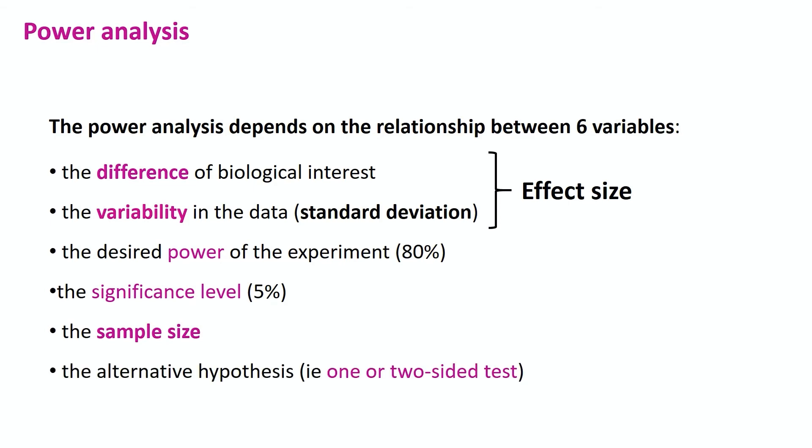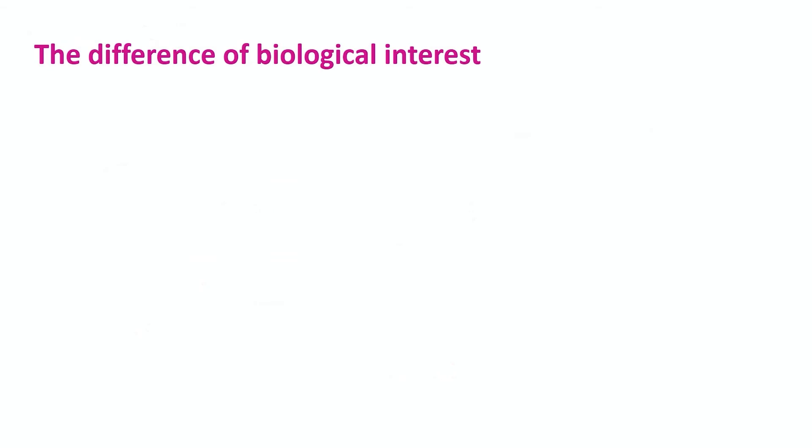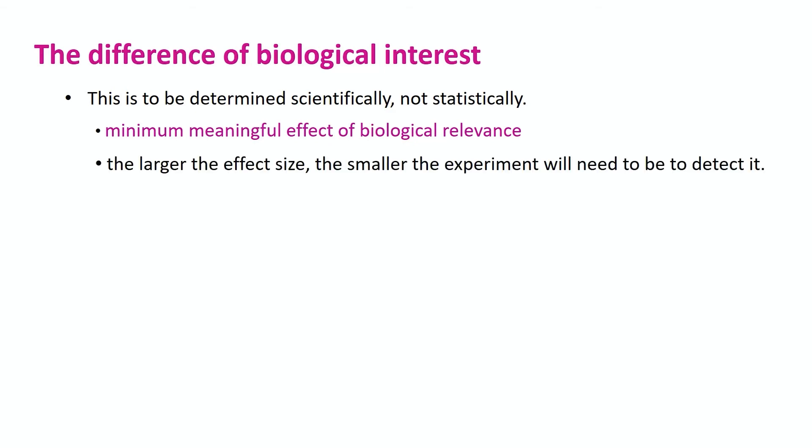First, the difference of biological interest. This is to be determined scientifically, not statistically. It is the minimum meaningful effect of biological relevance, as in the smallest difference that matters. The larger the effect size, the smaller the experiment we need to detect it. It means that we have to have an idea of the difference we are after before we run our experiment. It may seem counter-intuitive, but it is not actually, as not every difference matters. Some are too small to be reported or explored further. So, we need to determine the smallest meaningful one for us. And how do we do that? Well, from previous research or a pilot study, for example.